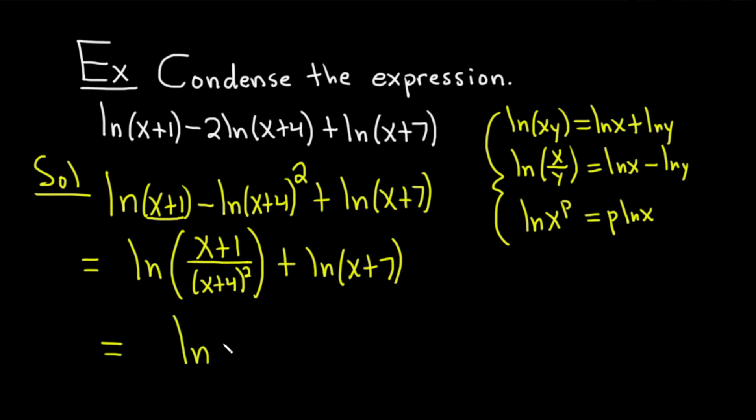Now we've got a plus sign between two logs, so we can use the product rule. This will be the natural log of parentheses. It'll be x plus 1 over x plus 4 squared. That's the first piece. Times x plus 7.